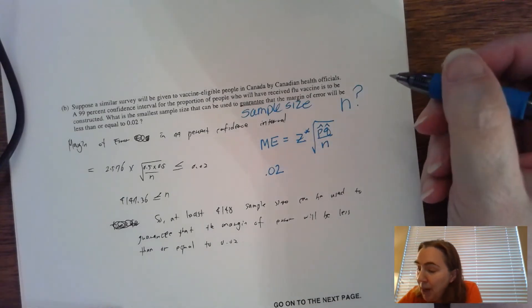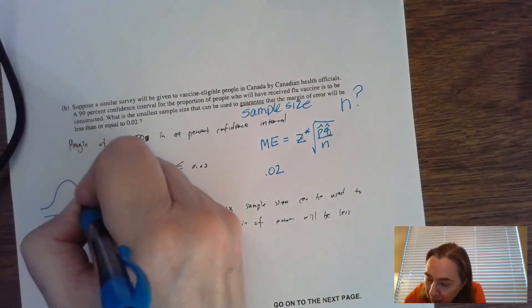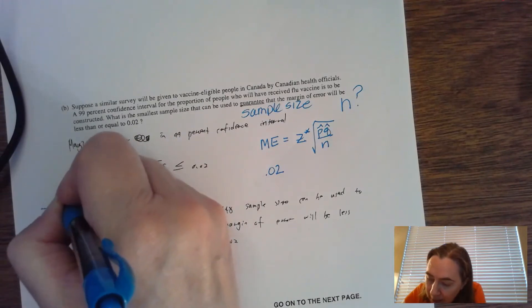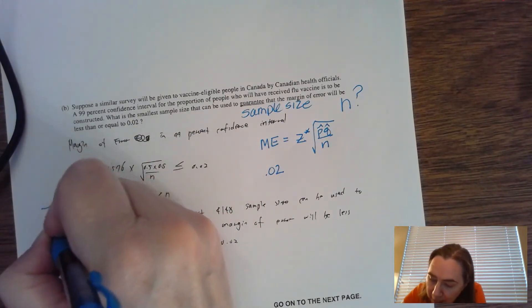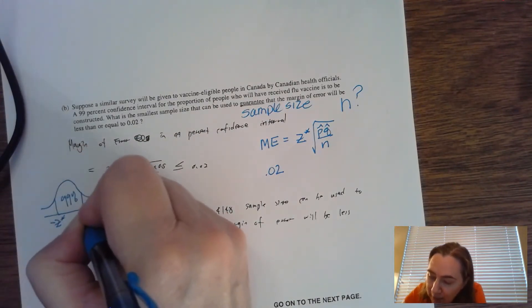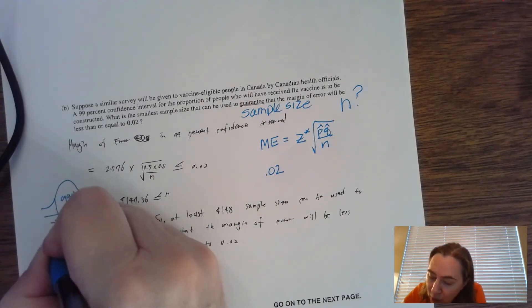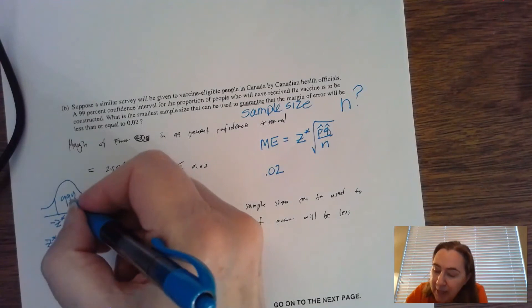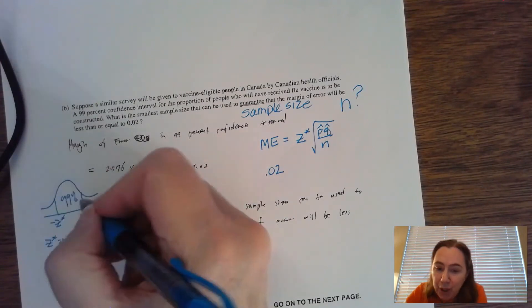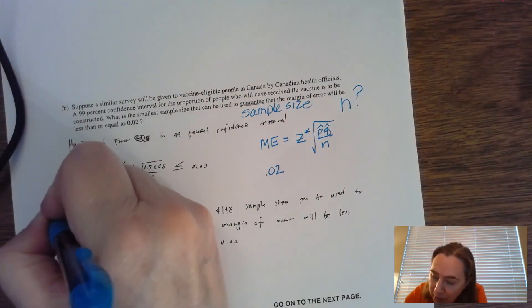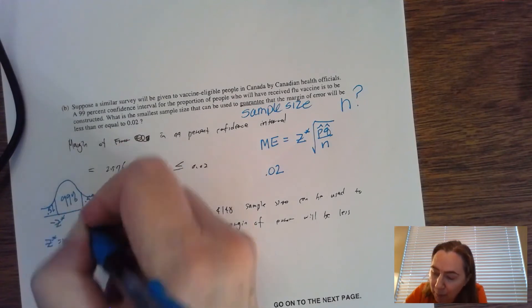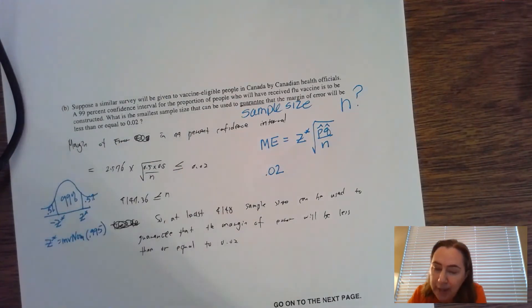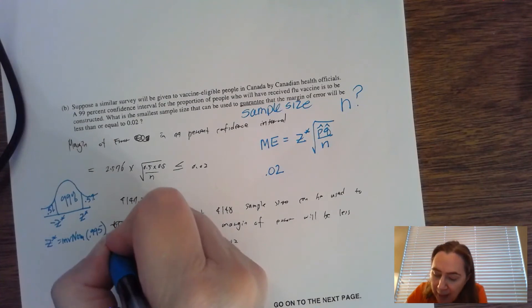Z* —you might have already done it from the previous part—but the z* we're looking for for 99% confidence: this would be negative z*, this would be positive z*. Z* would be equal to invNorm. If that's 99%, one percent is shared: half a percent here, half a percent there. What I'm going to do is invNorm(0.995), and that's going to give me 2.576.